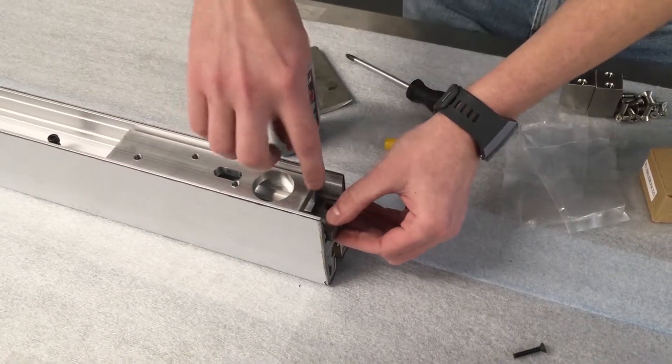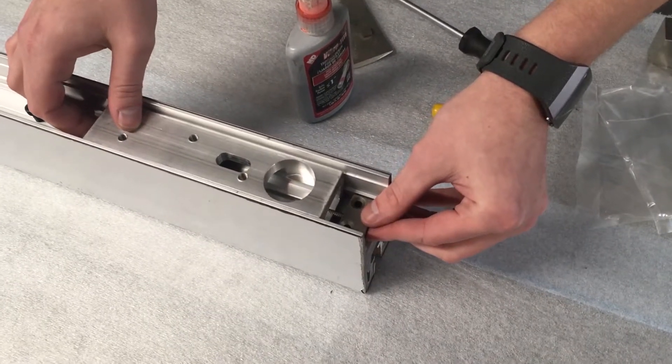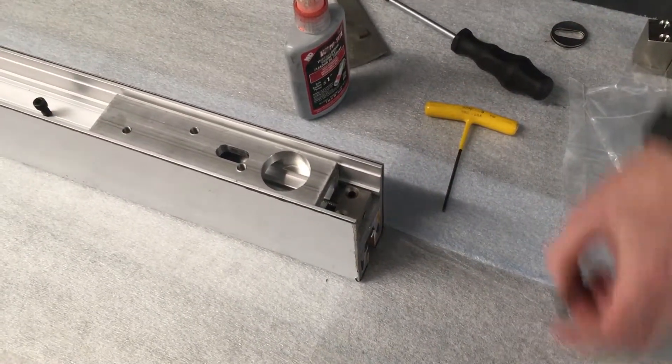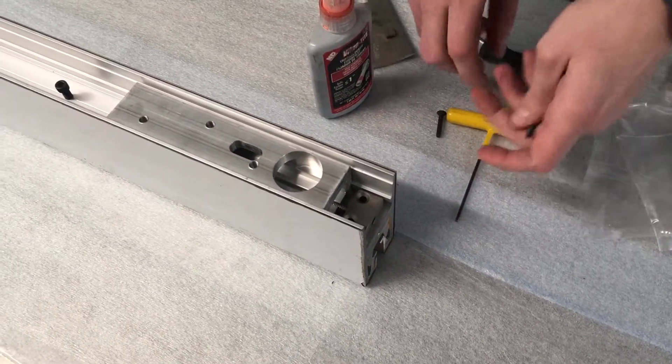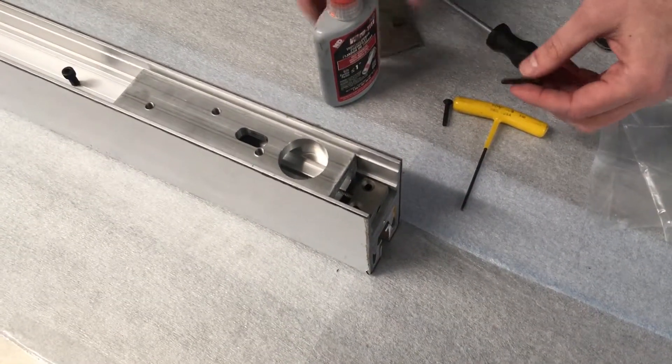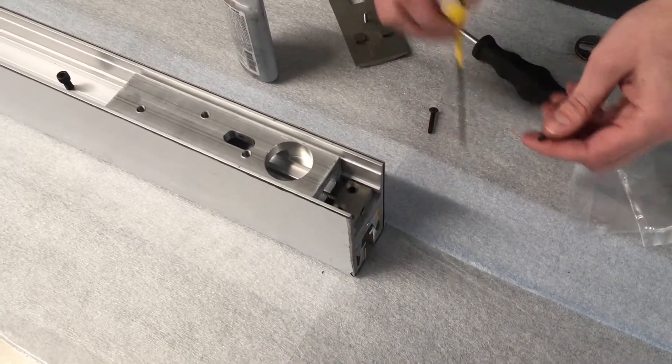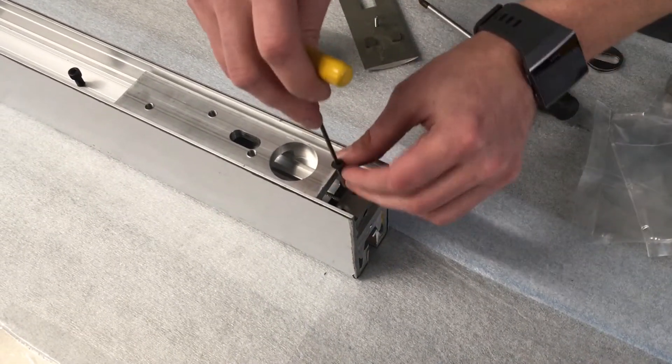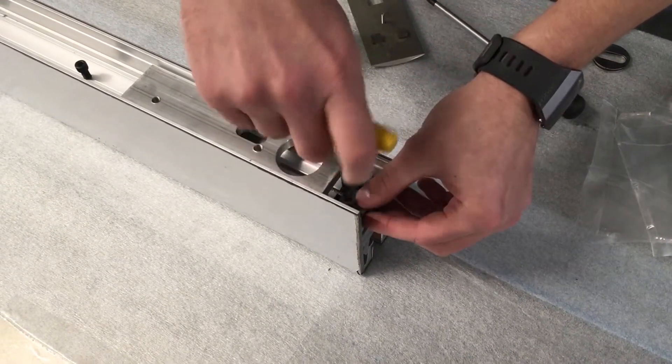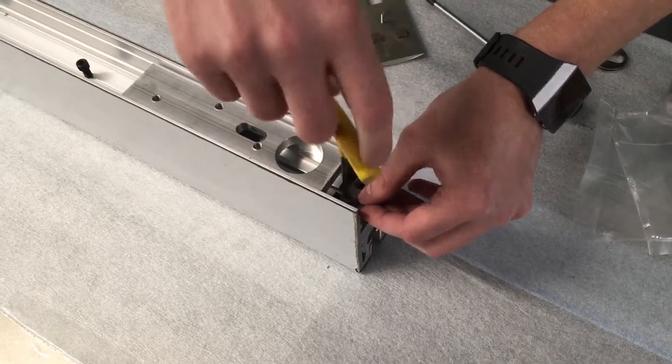And then we just want to line up the holes through the adjuster block with the threaded holes in the door rail. Next we will tighten down the adjuster block with 8-32 fasteners. We will be applying thread locker to each fastener and then using a 3/32nd Allen key to secure the block to the base of the door rail.